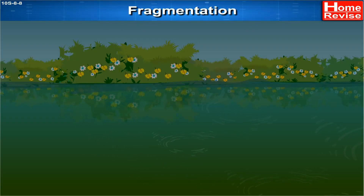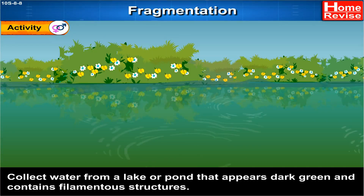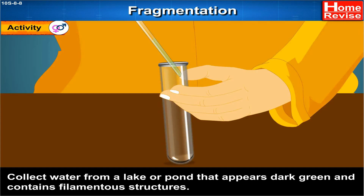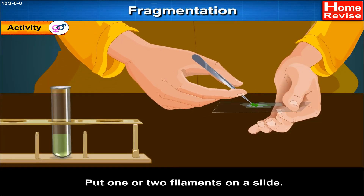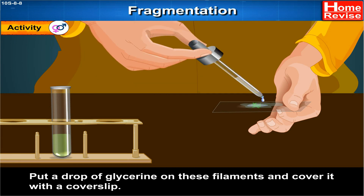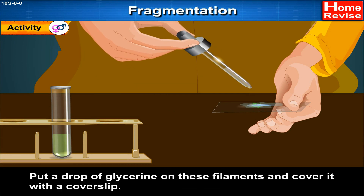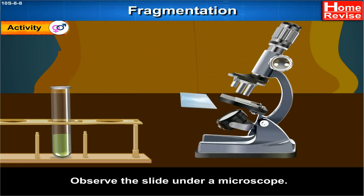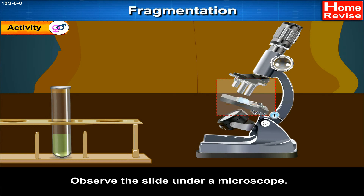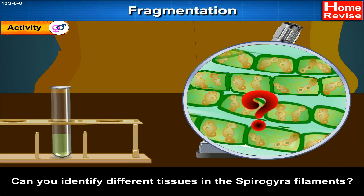Fragmentation. Let's perform an activity. Collect water from a lake or pond that appears dark green and contains filamentous structures. Put one or two filaments on a slide, put a drop of glycerine on these filaments, and cover it with a cover slip. Observe the slide under a microscope. Can you identify different tissues in Spirogyra filaments?